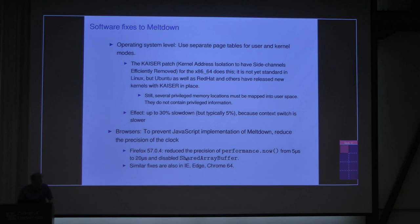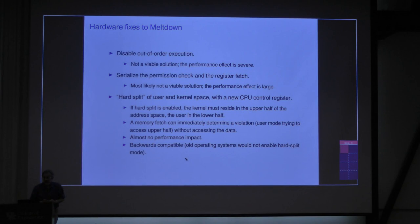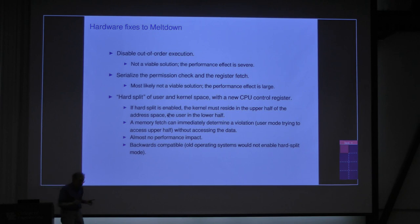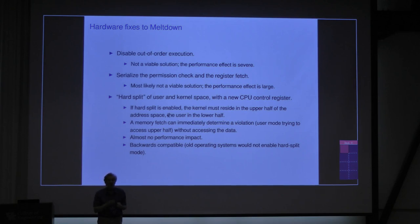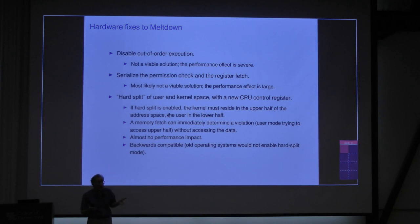Reducing clock precision to 20 microseconds was chosen to still be usable but precise enough to break the cache timing attack, which requires careful timing. The hardware fix options include: disabling out-of-order execution — but no one wants that because it kills speed; doing the permission check before the memory access — also too slow; or a new architectural approach of adding a register to the CPU that, when enabled, immediately blocks any ordinary process from using addresses in the top half of the address space. You can check the top bit very quickly without consulting page tables. My guess is within a year we'll start seeing processors with that new register.